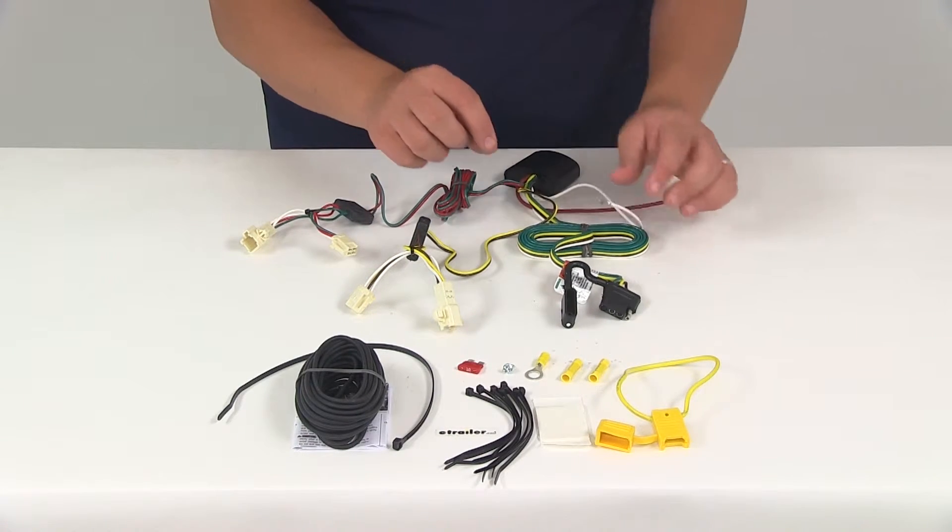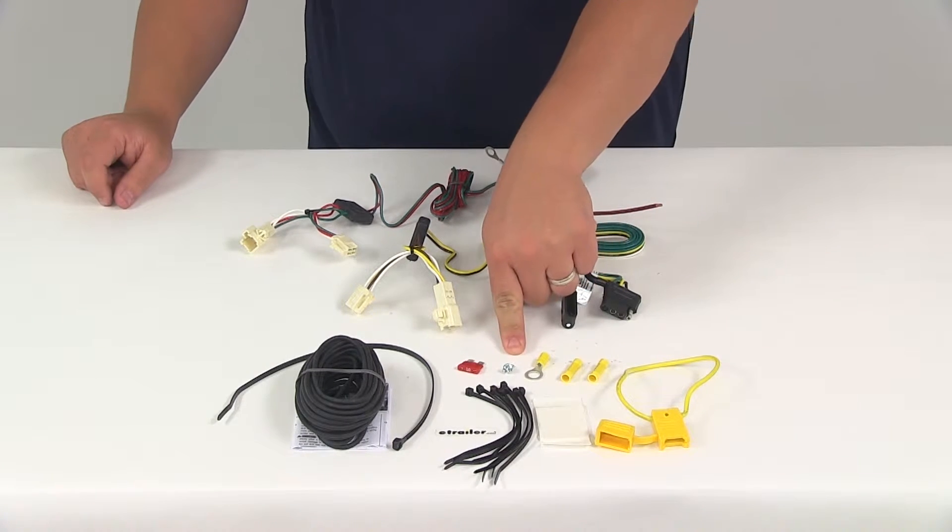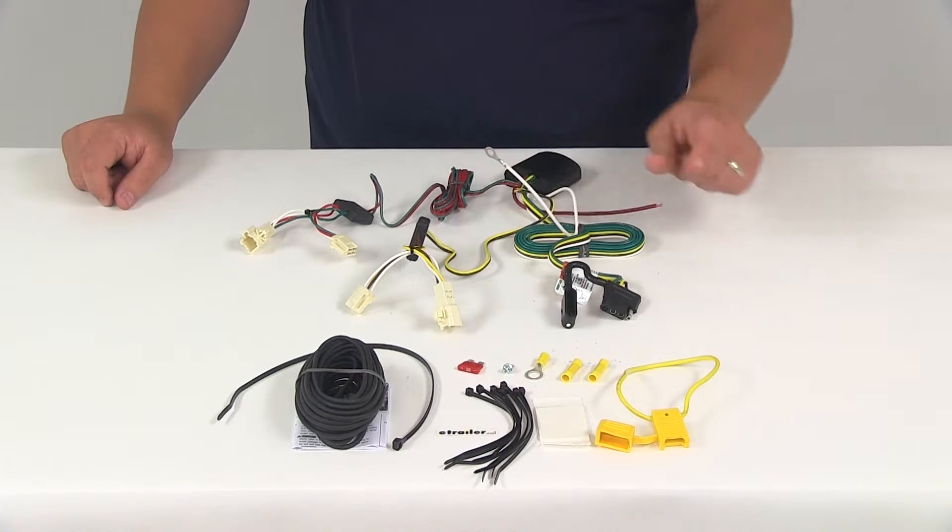You're going to need to make your ground connection. That's the white wire right here with the ring terminal attached to it. You can do that to a nice clean metal surface using the included self-tapping screw.